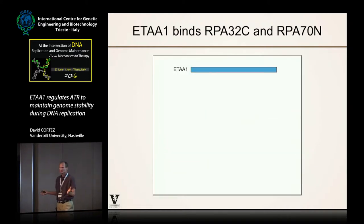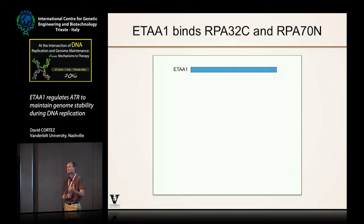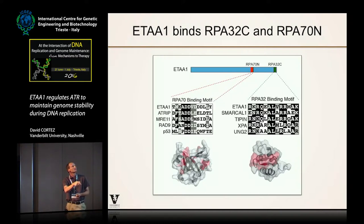The ETAA1 protein sequence didn't give us much insight into what it might be doing. It's 100 kilodaltons, and when you BLAST search it, it's conserved in vertebrates but has really no known domain structure. We hypothesized it might be interacting with RPA based on how it behaved in the iPOND datasets, and in fact that's true — there are two RPA-interacting motifs in this protein. The strongest one is at the C-terminus and interacts with the winged-helix domain of RPA32.